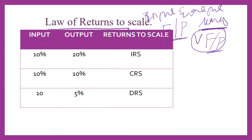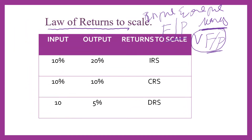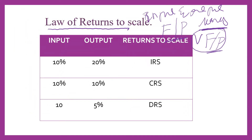This law of returns to scale can be studied under three stages: increasing returns to scale, constant returns to scale, and decreasing returns to scale or diminishing returns to scale.